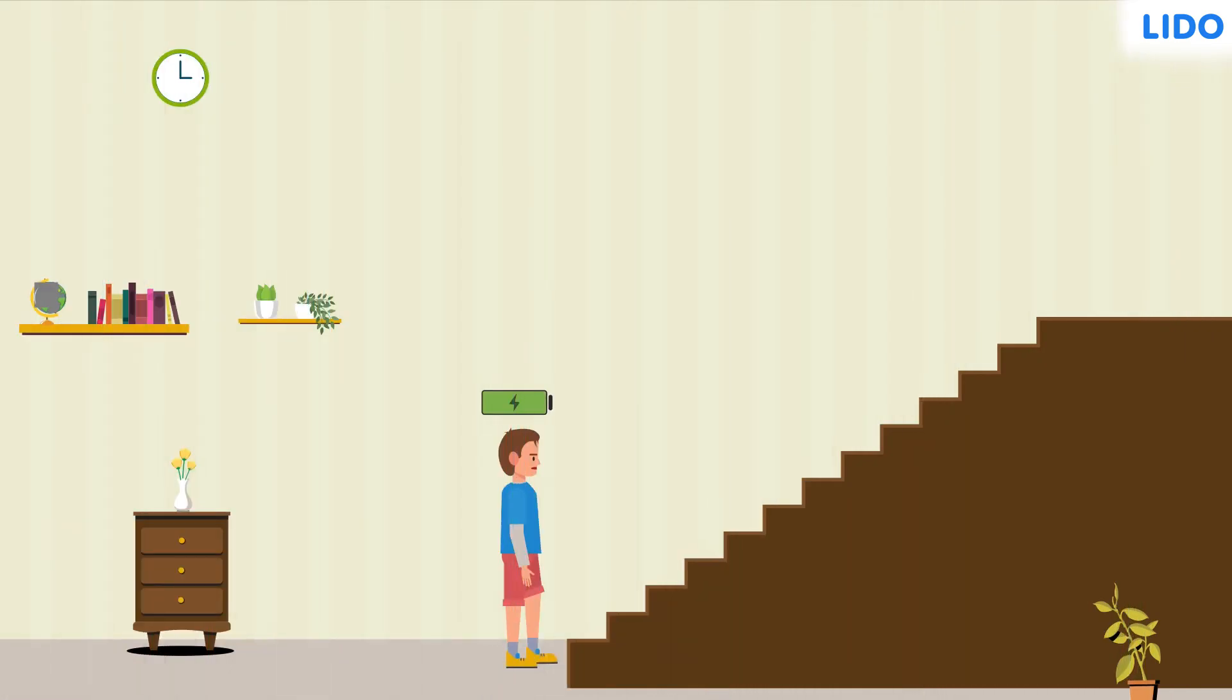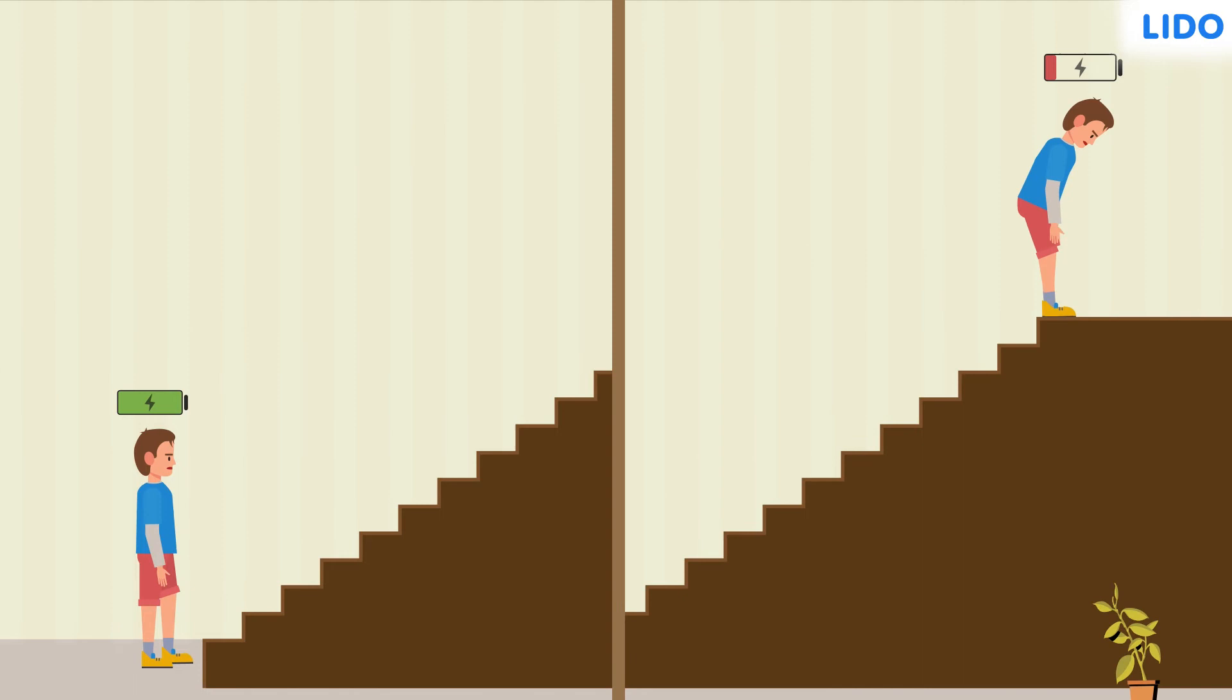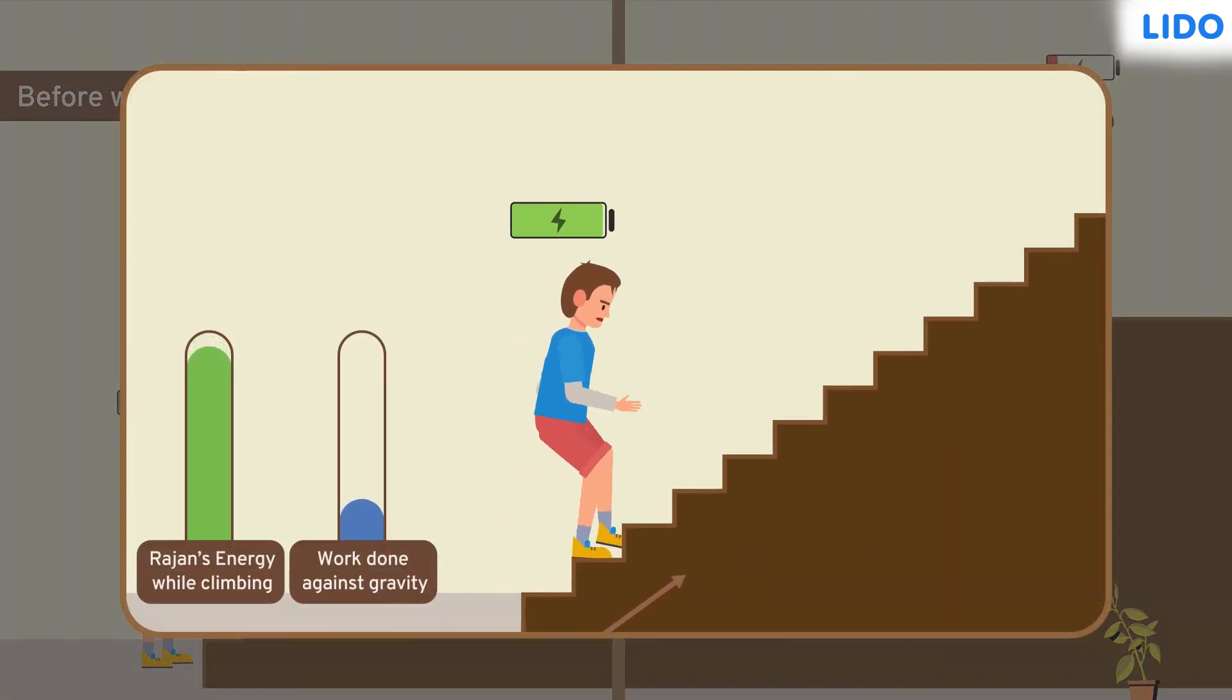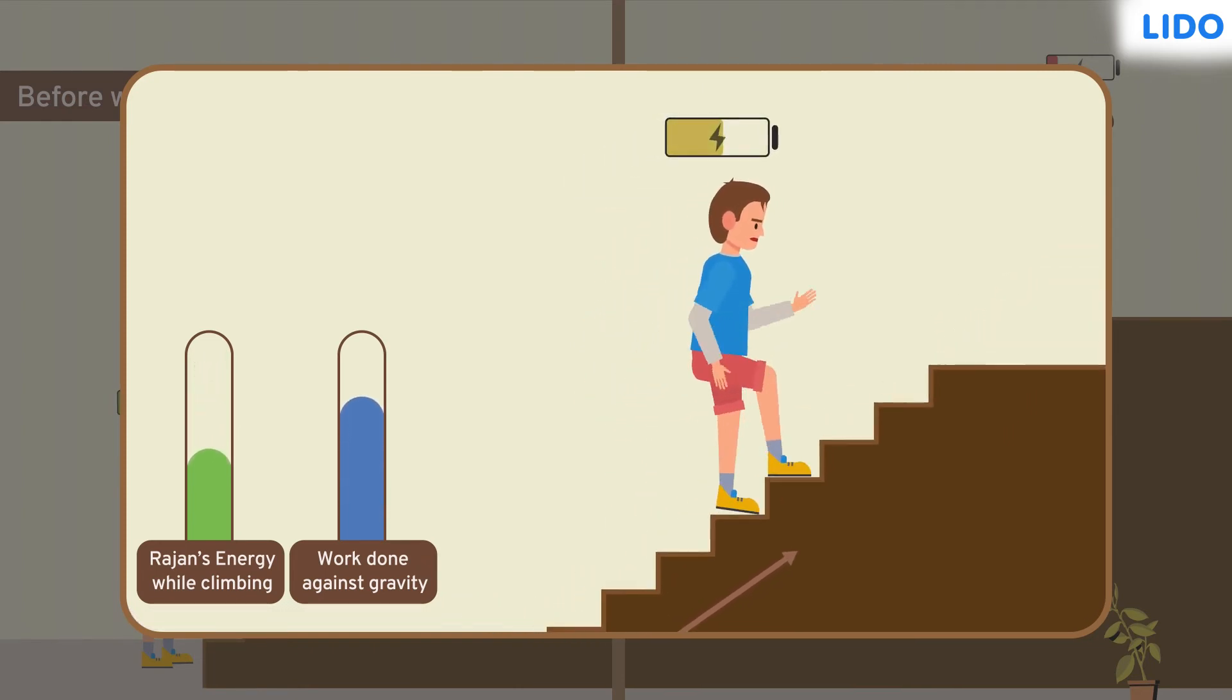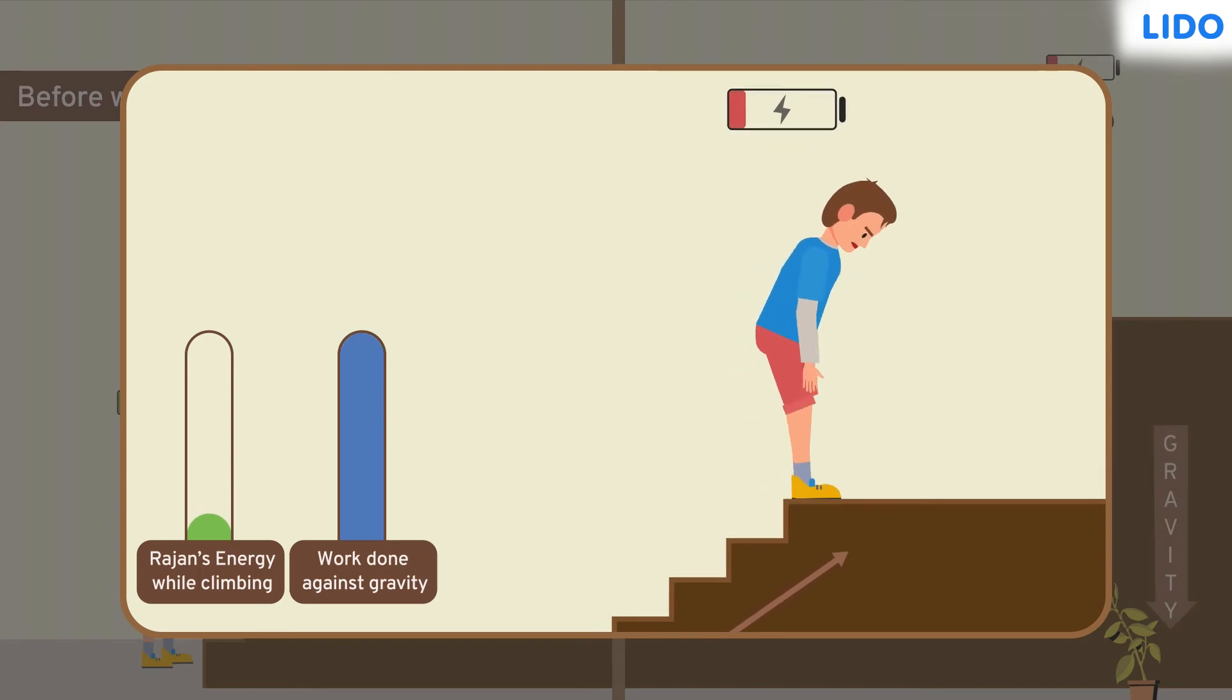We know that before climbing the stairs, the energy Rajan had was lost while the work of climbing was done. Or we could say, Rajan had the energy and with that energy, he did the work of climbing the stairs against gravity.